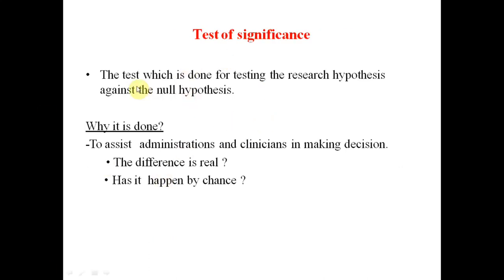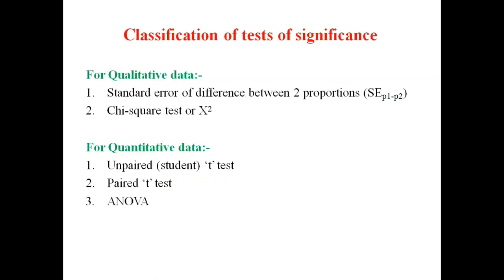After doing a test of significance, we are testing the research hypothesis (alternate hypothesis) against the null hypothesis. We check whether the difference we observe is real or happened by chance — that is the p-value. If it is less than 0.05, the difference is real; if not, it occurred by chance. In this video, I'll explain chi-square test, standard error of two proportions, student t-test, paired t-test, and ANOVA.